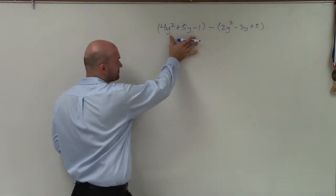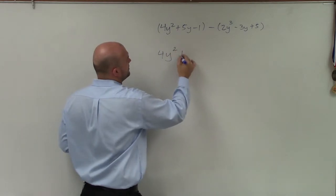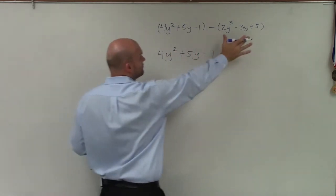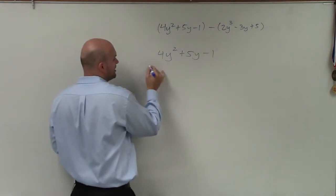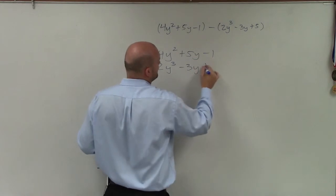I'm simply going to take my first polynomial as 4y² + 5y - 1. Then I'm going to write the next polynomial below it: 2y³ - 3y + 5.